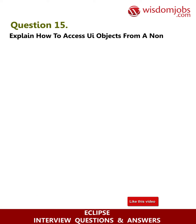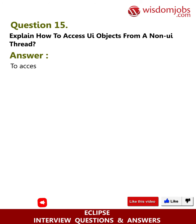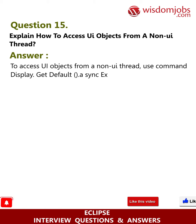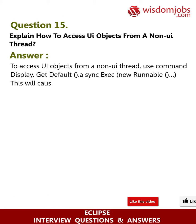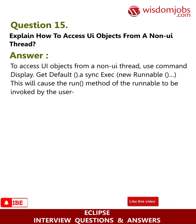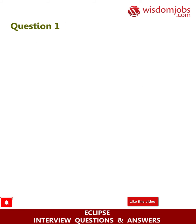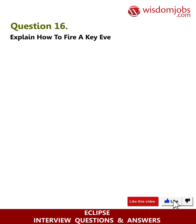Question 15: Explain how to access UI objects from a non-UI thread. Answer: To access UI objects from a non-UI thread, use the command Display.getDefault().asyncExec(new Runnable). This will cause the run method of the Runnable to be invoked by the user interface thread at the next reasonable opportunity.